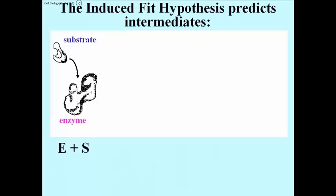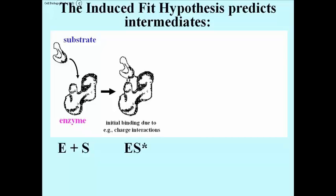The induced fit mechanism predicts intermediates in the interaction of substrate with enzyme to form product. So we have it drawn here as enzyme plus substrate, being drawn to one another. When they are in fact bound to one another, we could say that there is an intermediate we can call ES*. This is an initial intermediate.